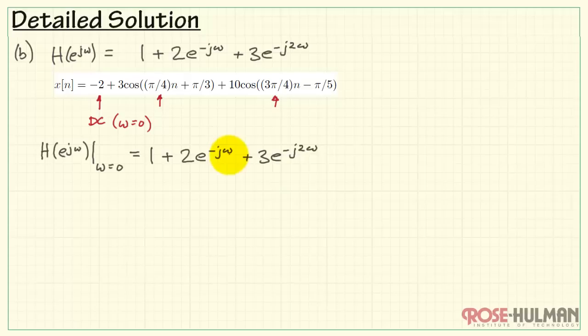Every place that I see omega, I'll drop in a 0. Now, we recognize that e raised to the 0 is simply 1. And that takes that out to 1 as well. Adding the results, we have a value of 6. This tells us that the system has a gain of 6 at DC.